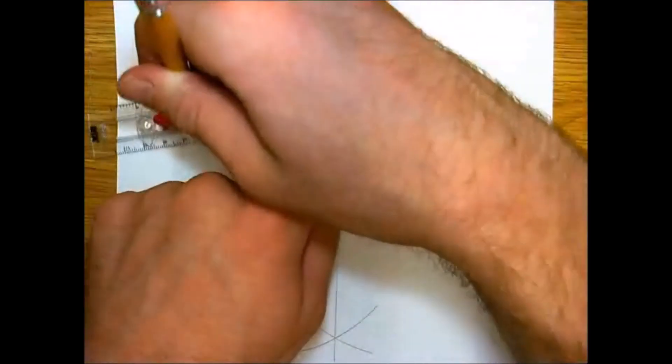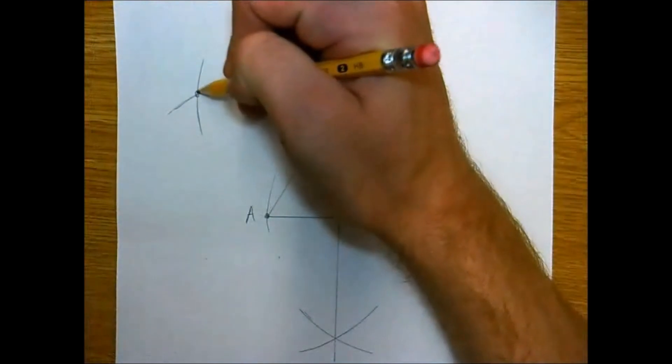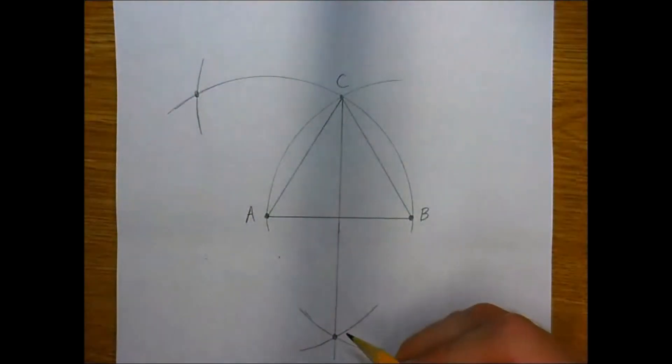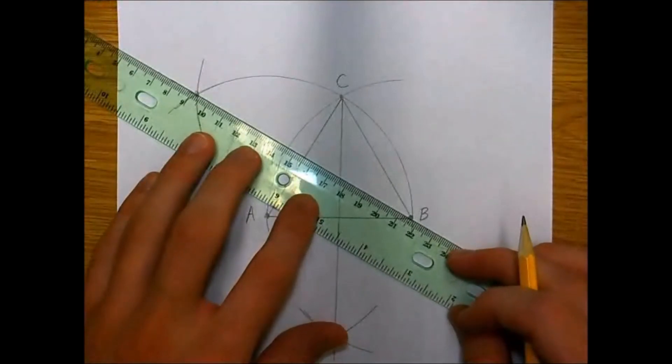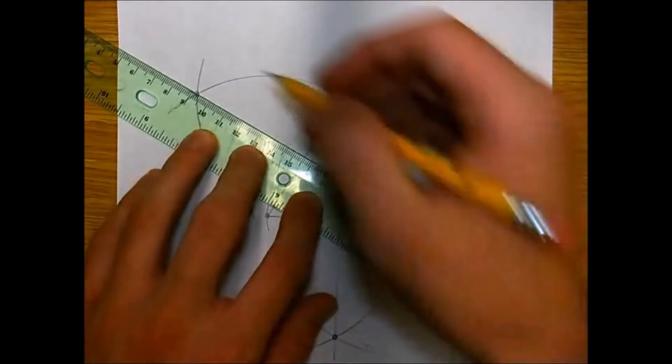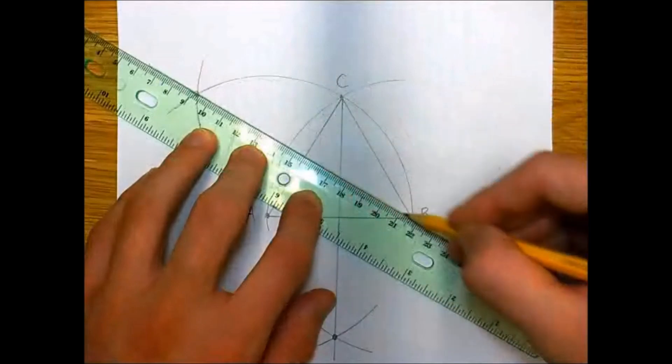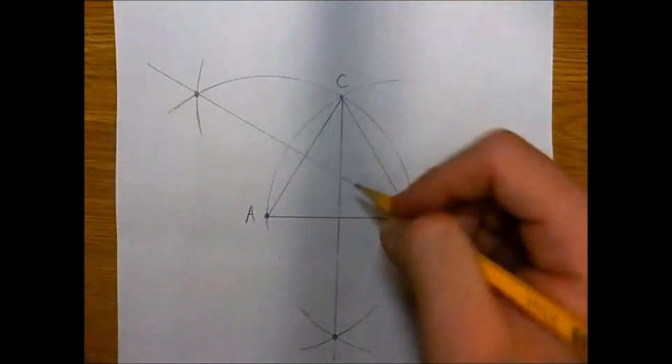Where these two arcs intersect, we're going to connect point B to the intersection of these two arcs. When we connect point B to this new intersection point, this will represent the perpendicular bisector of side AC.